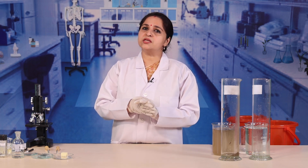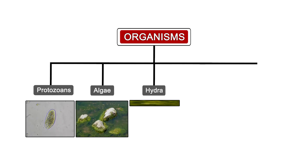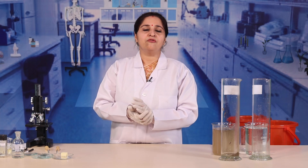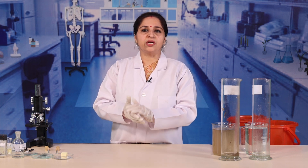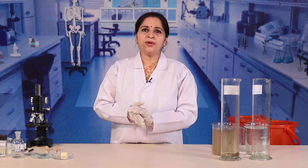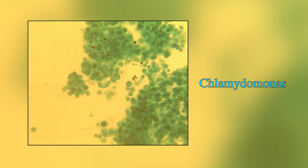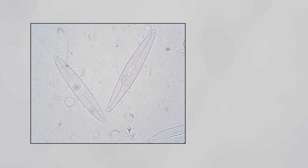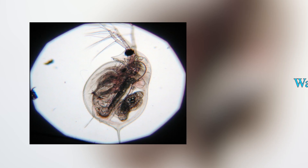Now, what have we observed? You may find various organisms in the study area of the slide, such as protozoans, algae, hydra, nematodes, arthropods, etc. These organisms will vary depending on the place of collection and the depth at which the water sample was collected. Some of the common organisms are Amoeba, Paramecium, Chlamydomonas, Euglena, Asterionella, Spirogyra, Navicula, Cocconeis, Cosmarium, Chaetoceros, water flea, and Hydra.